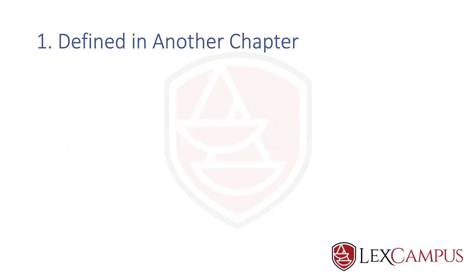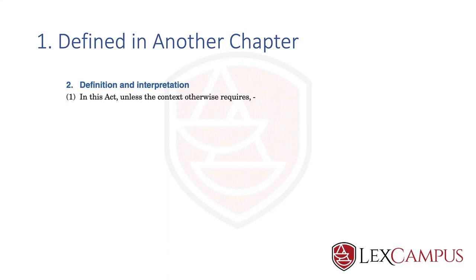The first type of definition is something defined in another chapter. Section 2 begins with the preamble: 'in this act unless the context otherwise requires.' This is important — it means that in a different context, a term can have a different meaning, so whatever is explained here could have a different meaning in another chapter.